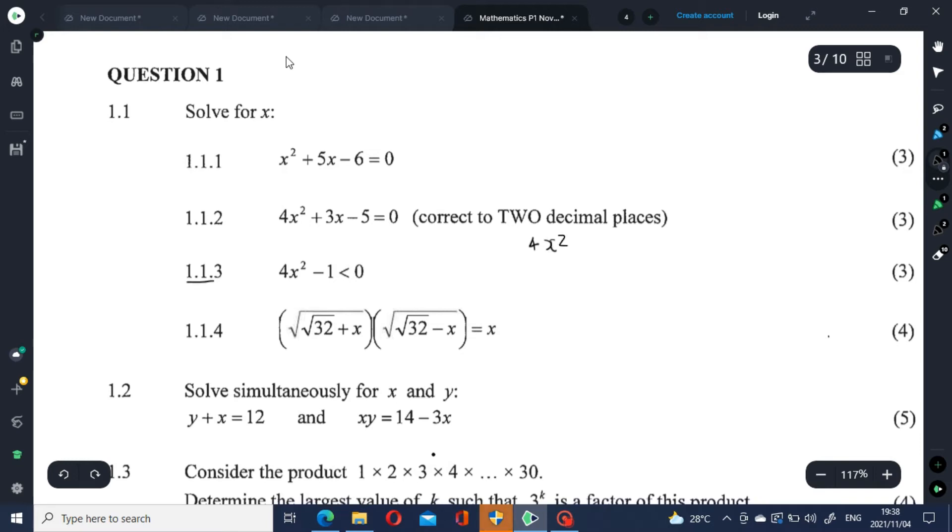Step number one is to write the quadratic inequality in the form of a standard quadratic equation. So we have 4x squared minus 1 equals 0.